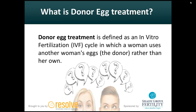Donor egg is an alternative treatment for women who can't use their own eggs. The common denominator is in vitro fertilization, and that's the portion the egg donor goes through. The patient as the recipient has the embryo transferred to her, so she doesn't go through the ovarian stimulation and egg retrieval usually associated with IVF. It's the donor's egg that is stimulated, fertilized with the partner's sperm, the embryo developed, and ultimately transferred to the recipient.